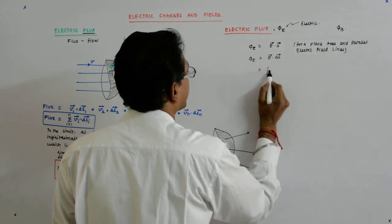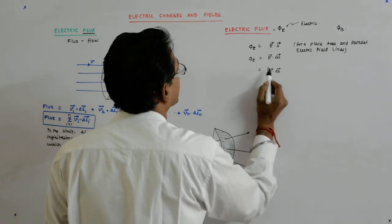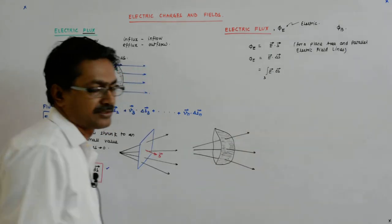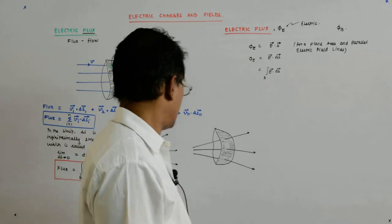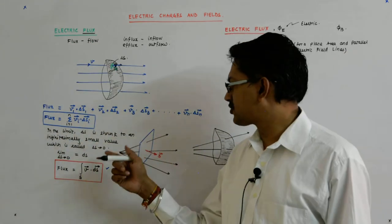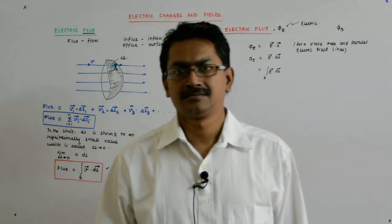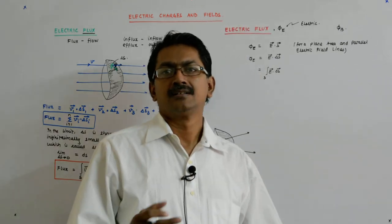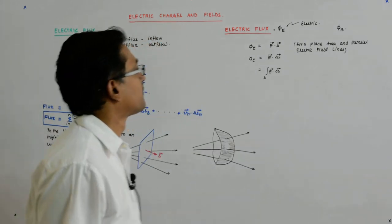...which for the exact thing becomes E dot dS over the surface S. So it is nothing but V replaced by E because that is what seems to be flowing in case of an electric field.